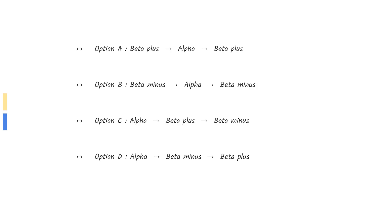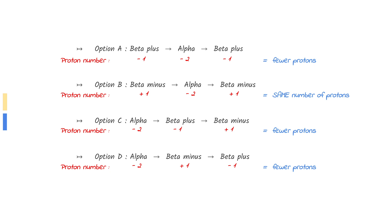The sequence of decay must result in the final element being an isotope of the initial element — in other words, the number of protons must be the same. You would need to try all the options to find which one ends up with the same number of protons. In option B, beta minus increases the proton number by 1, then alpha decreases it by 2, then beta minus again increases it by 1, resulting in no overall change in proton number. All other options will end up with fewer protons.